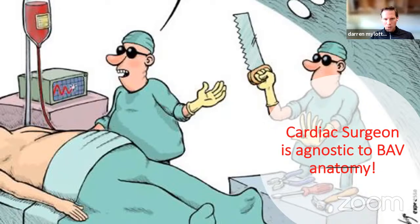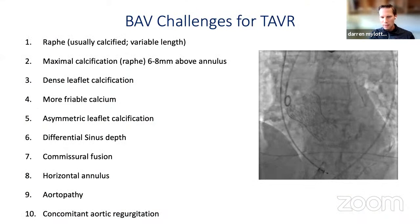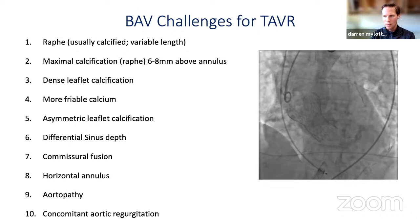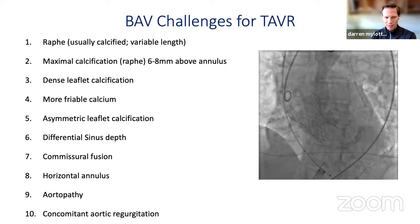Although it's not a competition between surgery and TAVI, it's important to know that surgeons get great outcomes with surgical aortic valve replacement in younger patients with Bicuspid. So we're going to have to up our game with respect to TAVI. The first anatomical challenge is the RAFA, which is usually calcified with variable length. The maximal calcification of the RAFA is about six to eight millimeters above the annulus — unusual for us because all our devices are designed to give maximal expansion force at the base, at the level of the annulus, and now we need more force higher up.